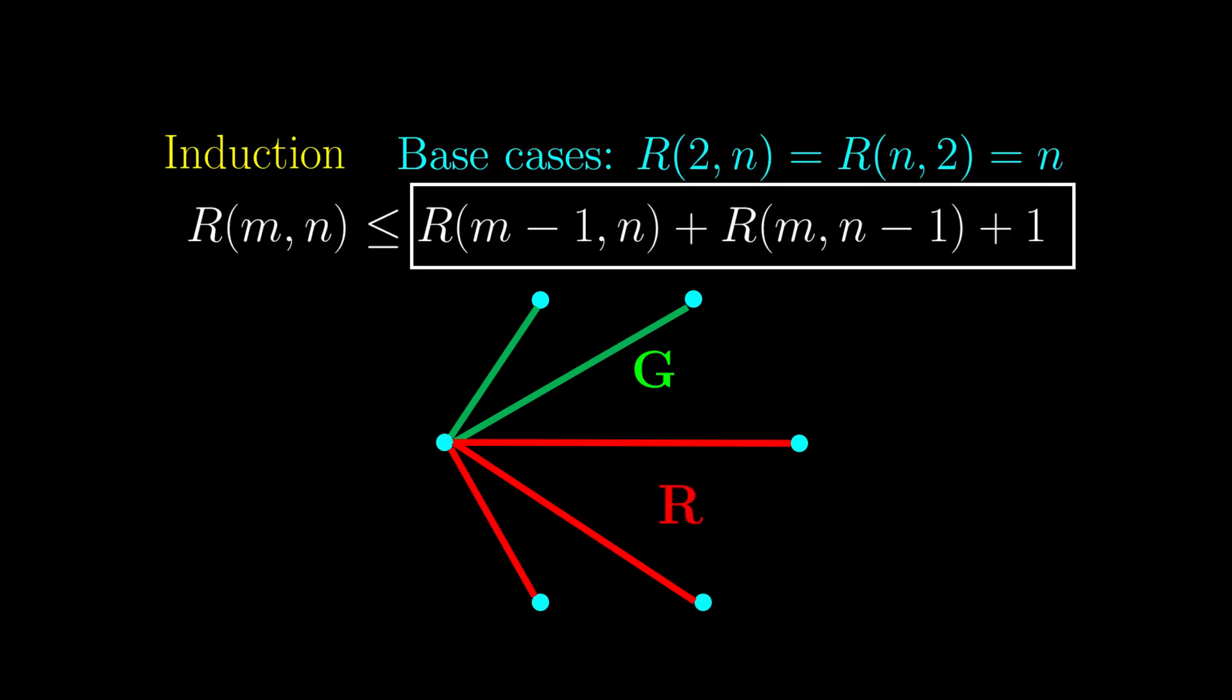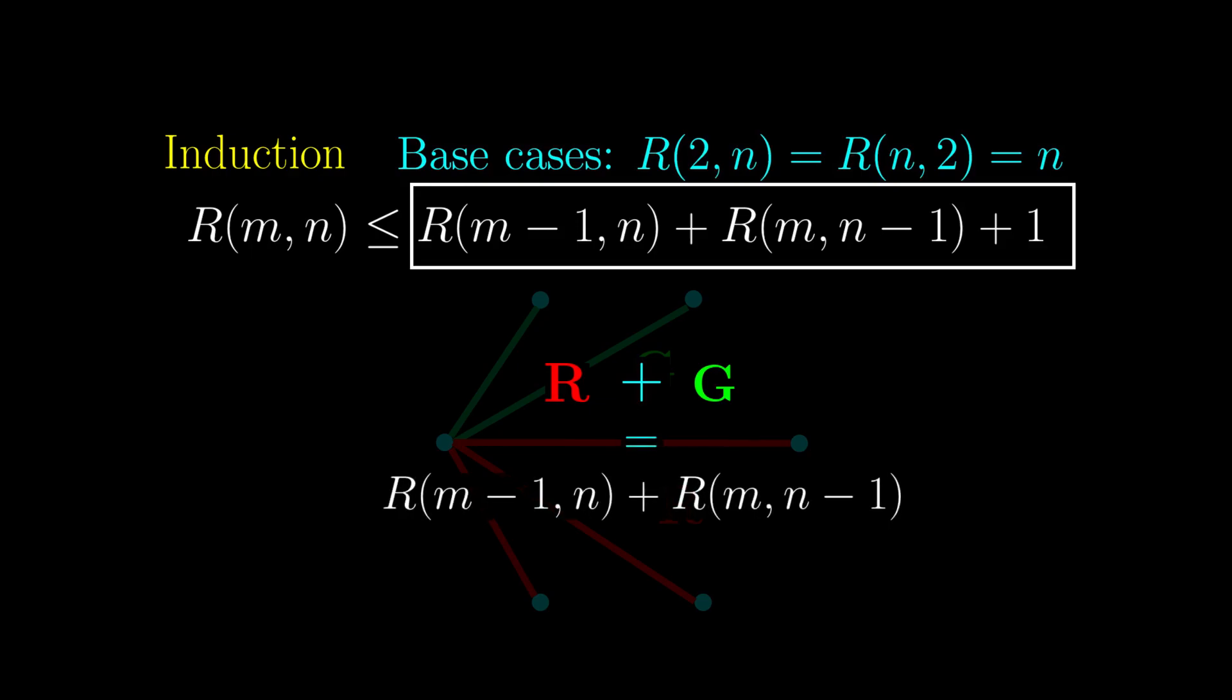Then based on this number of vertices we begin with, we have r plus g equal to the total number of vertices minus 1, which is the sum of these r something.